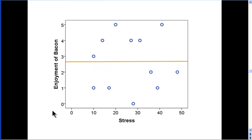Here's an example of absolutely no regression effect. Stress on the x-axis from lower to higher, and enjoyment of bacon on the y-axis. Presumably, there's no correlation between stress and how much you enjoy bacon. Well, there might be a correlation on stress on your heart.